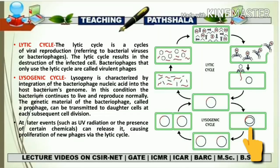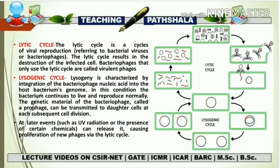The stage in which there is a bacterial genome with integration of the phage genome into it is called the prophage stage or prophage formation. At later events such as UV radiation, the presence of certain chemicals, or any kind of stress can release it and cause proliferation of new phage via the lytic cycle. This means the lysogenic phage can convert to a lytic phage. The phage that can switch between both cycles is known as a temperate phage.